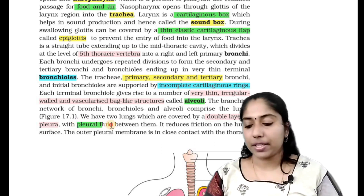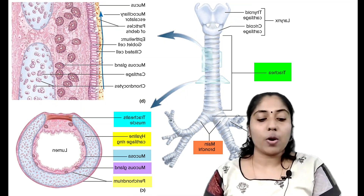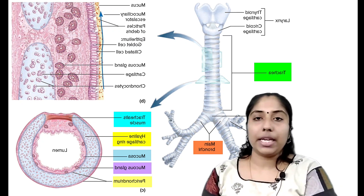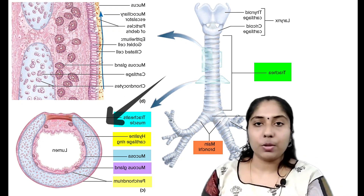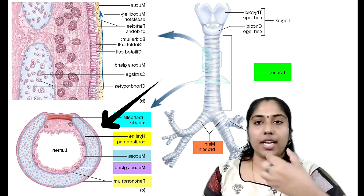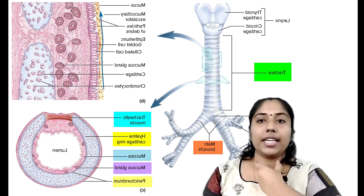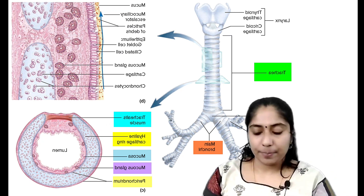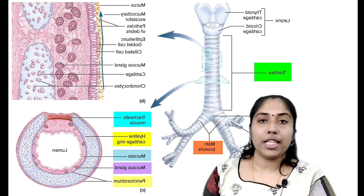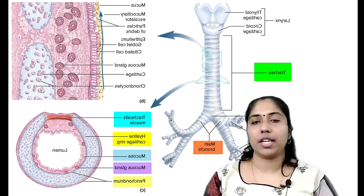This is what we call alveoli. The branching network of trachea, bronchioles, and bronchioles have an incomplete cartilaginous ring. This ring is present for the trachea, bronchi, and bronchioles. We call it a C-shaped ring.